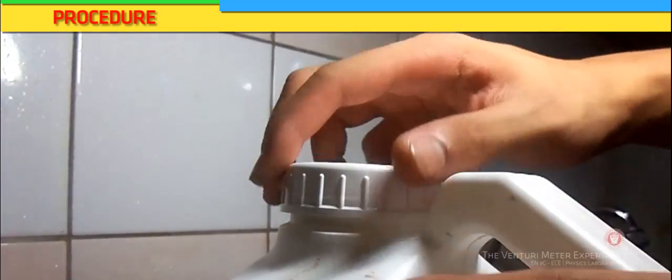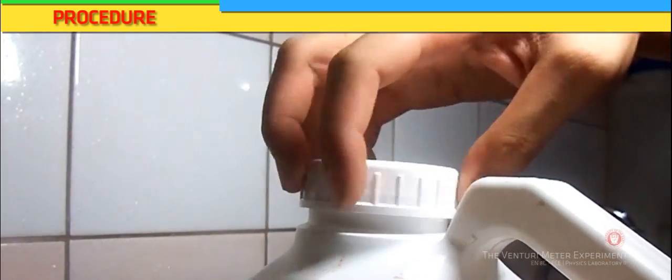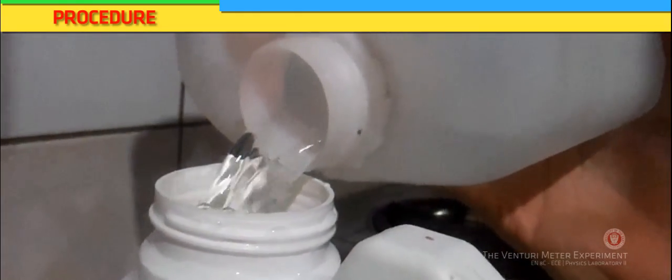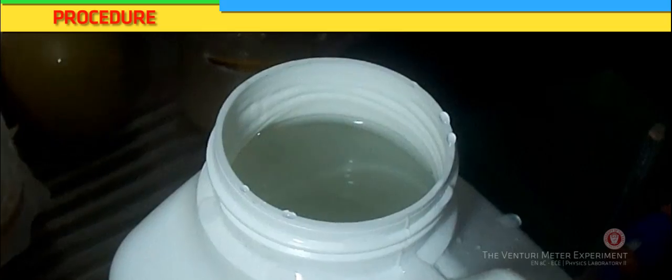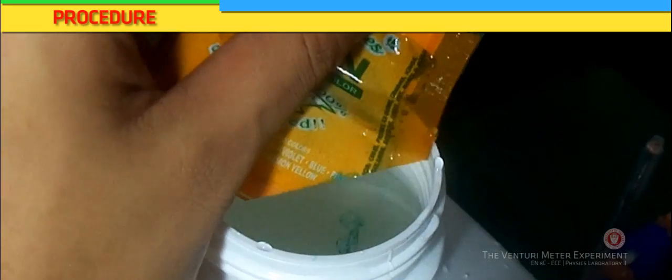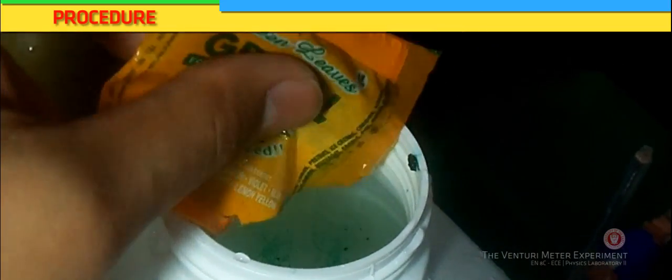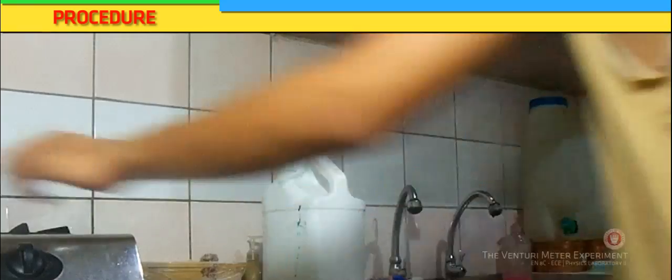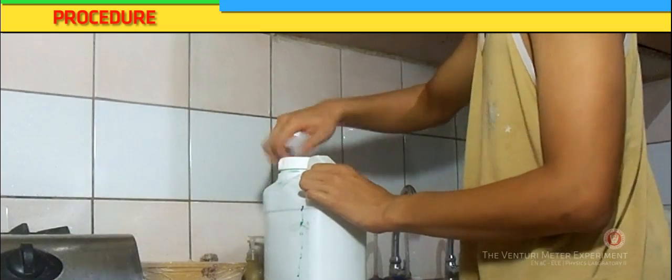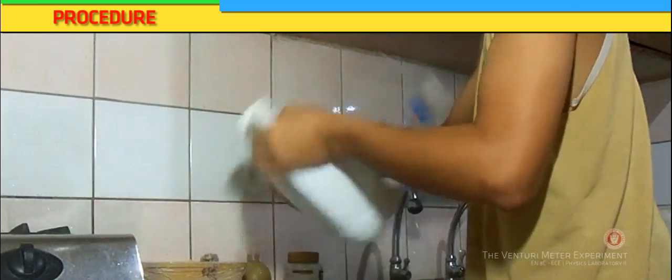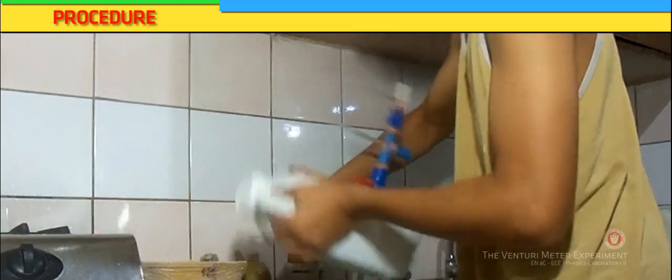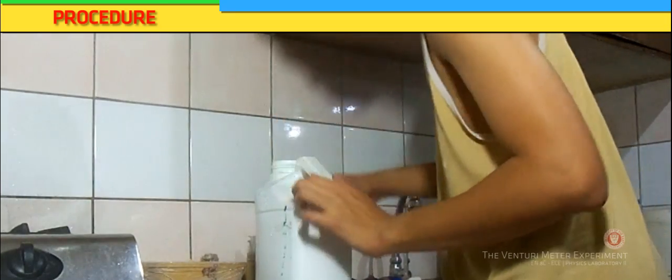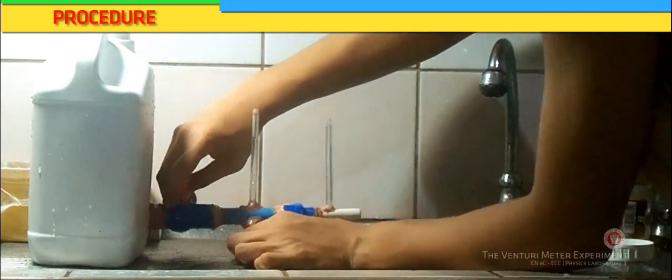To test the device, fill the container with water and the valve closed. Put some food coloring to see the effect more clearly. Lastly, open the valve.